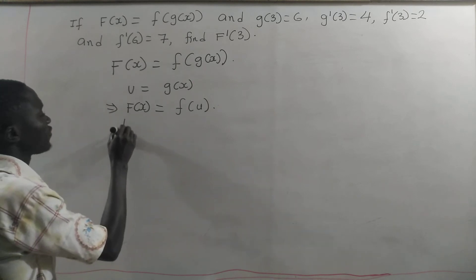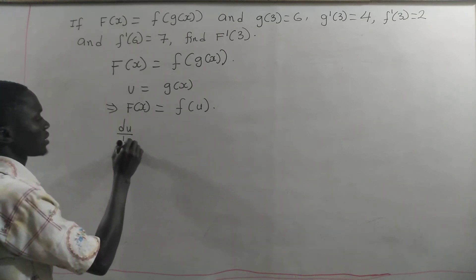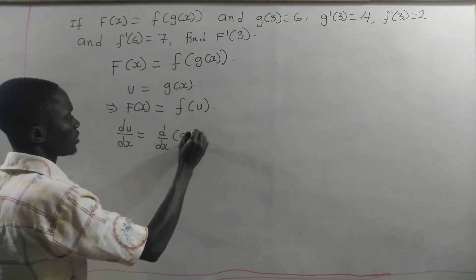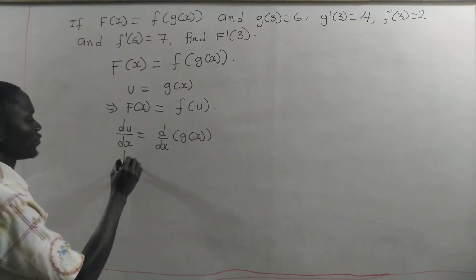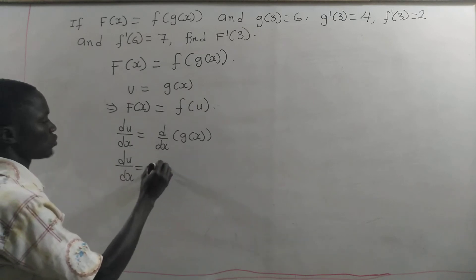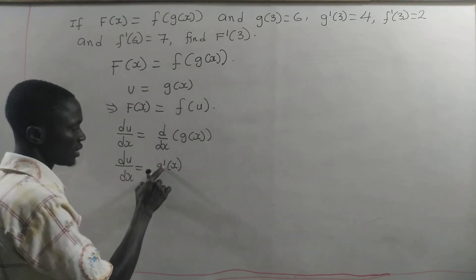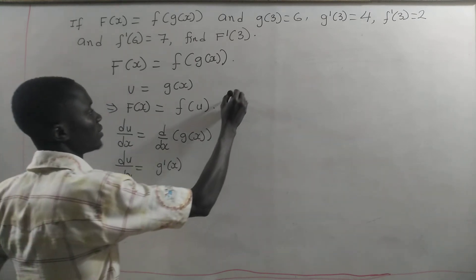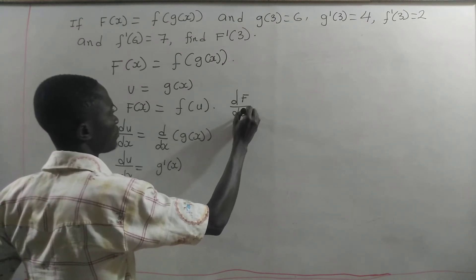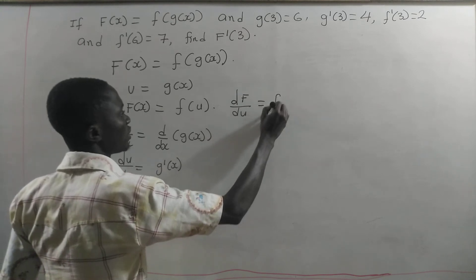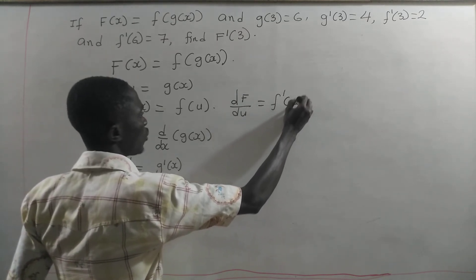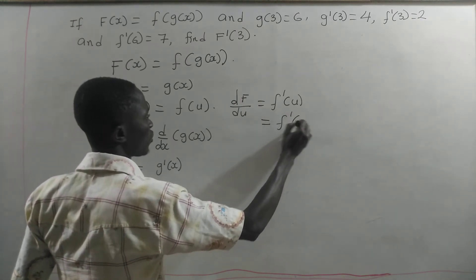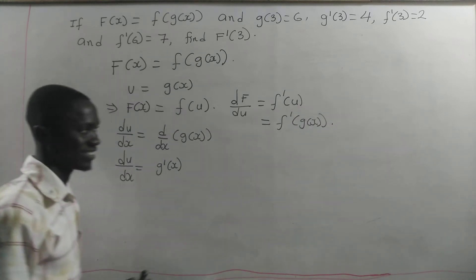The derivative of u with respect to x is equal to d/dx of g of x. So here, the derivative of u with respect to x is equal to g prime of x. This means the derivative of g of x. And the derivative of capital F with respect to u is equal to f prime of u, which is equal to f prime of g of x.